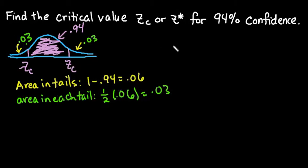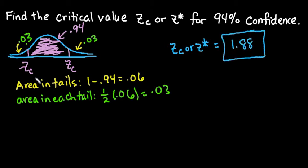So our critical value is going to be 1.88. And like I said, I'm just going to ignore the sign. Technically, we have negative 1.88 and positive 1.88. But most of the time when you're looking for the critical value, they're just going to have you report the positive value.